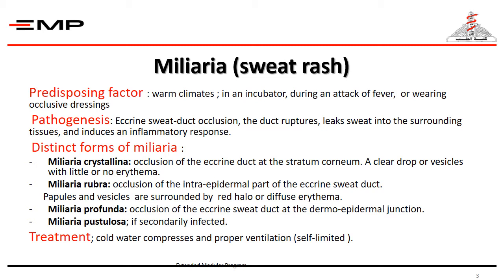In miliaria rubra, the papules and vesicles are surrounded by a red halo or diffuse erythema. Miliaria profunda involves occlusion of the eccrine sweat duct at the dermo-epidermal junction. Miliaria pustulosa occurs if secondary infection develops.